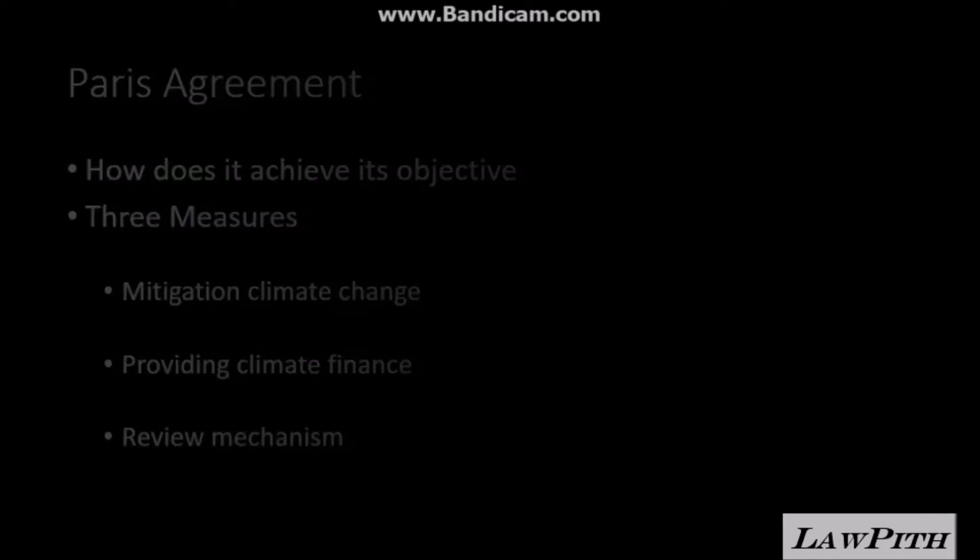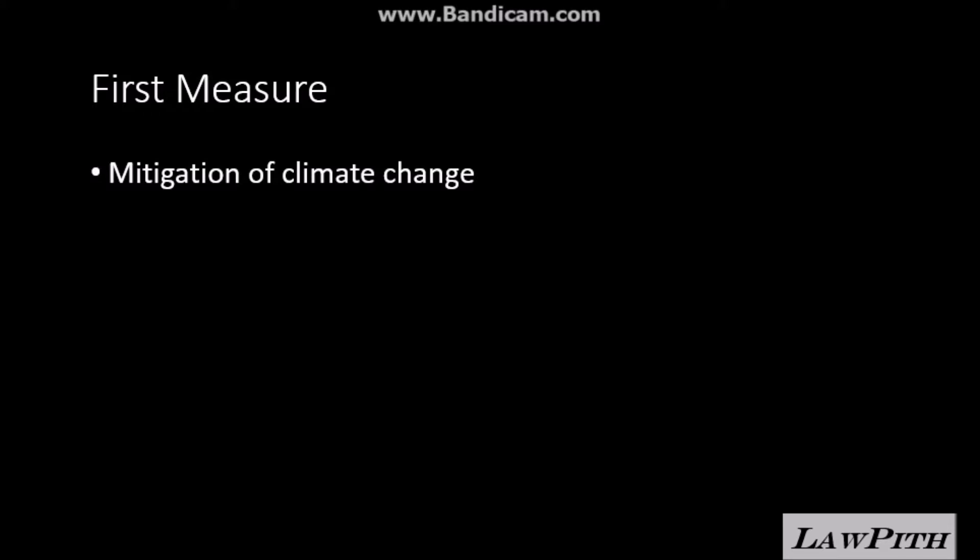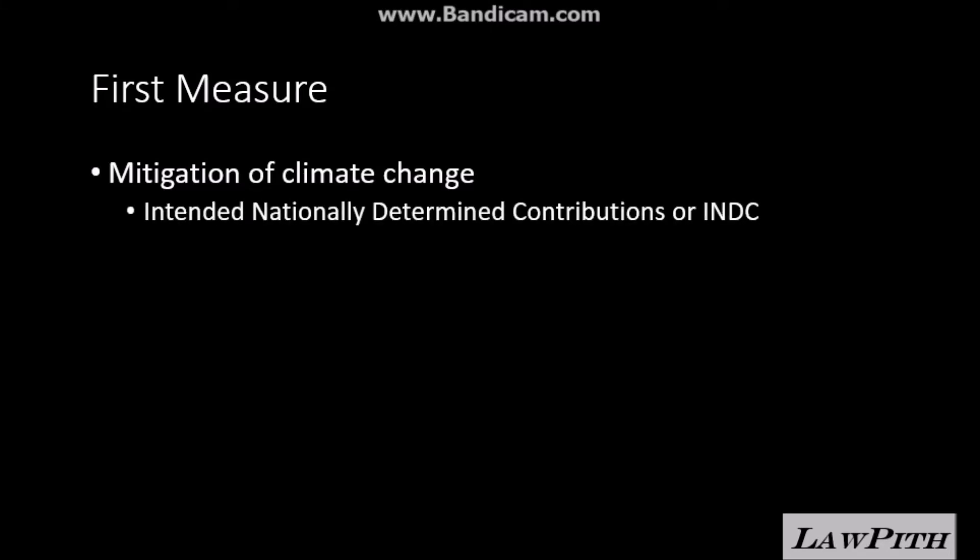Let us look in detail with respect to each of these measures. The first measure is with respect to mitigating climate change, which means putting a brake on all those activities which have an adverse impact on our climate. In order to do this without imposing any coercion or force on any country, the Paris Agreement has designed a discretionary model for each country where they can submit what is known as Intended Nationally Determined Contributions, or INDCs.